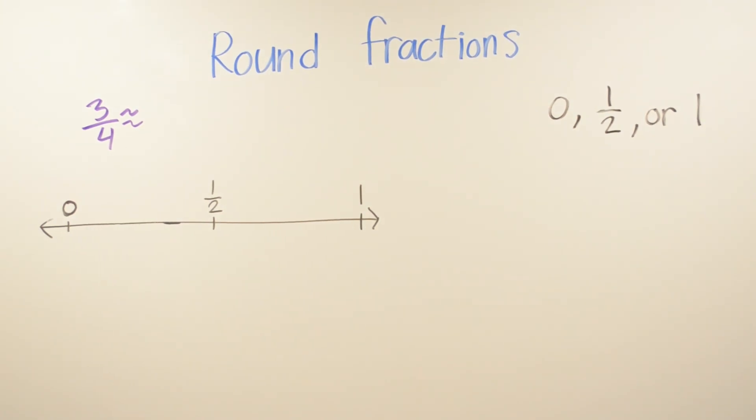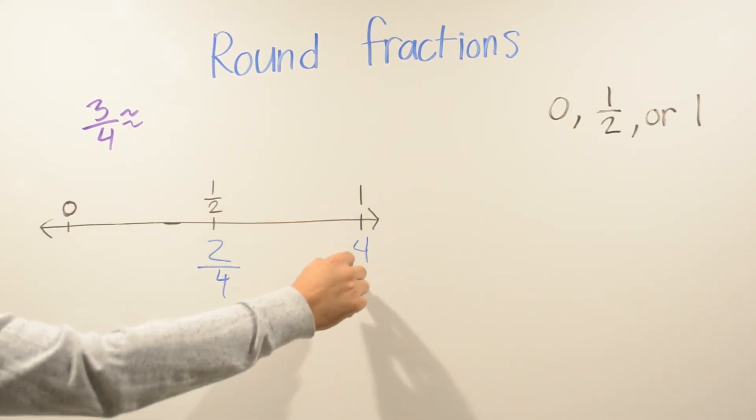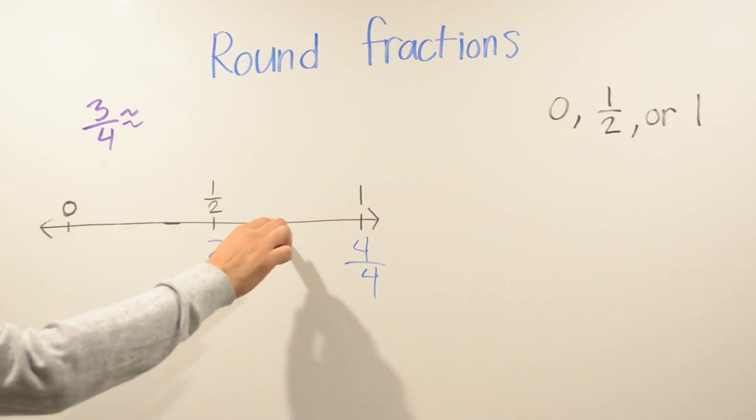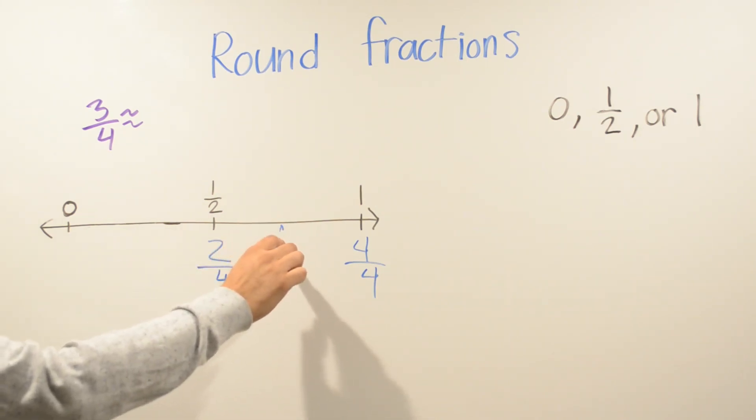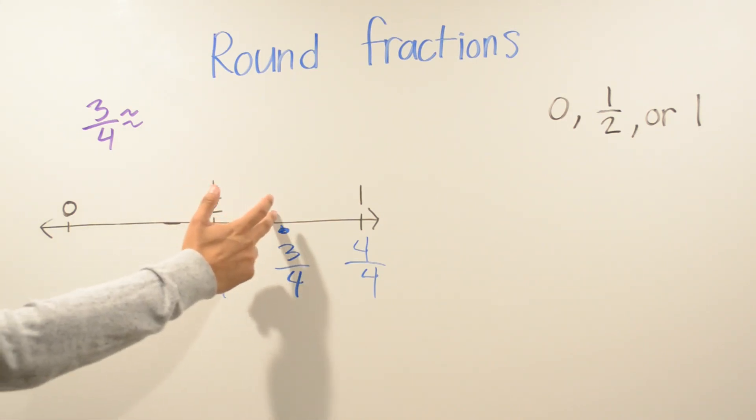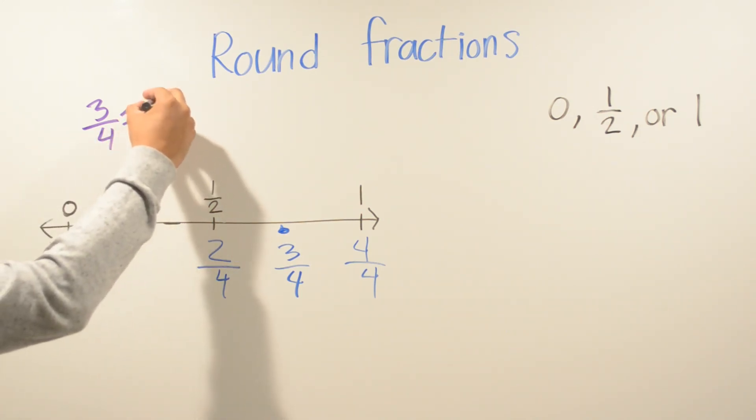In this example, we're doing 3 fourths. So we're going to go ahead and put what's going to be the half: 3 fourths is going to be 2 fourths. And then we know that 4 fourths is going to be the 1. And then in the middle, we're going to have 3 fourths. And we are looking for 3 fourths. So in this example, you can round either way. You can round back because it's only 1 space to half or 1 space to 1. I will go ahead and just round myself to 1.